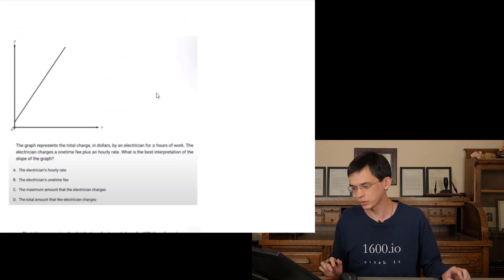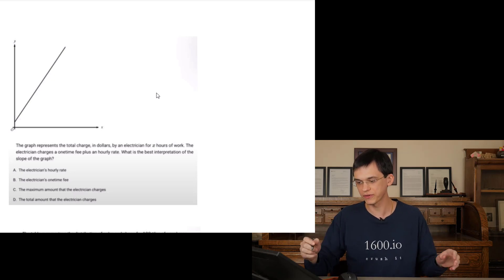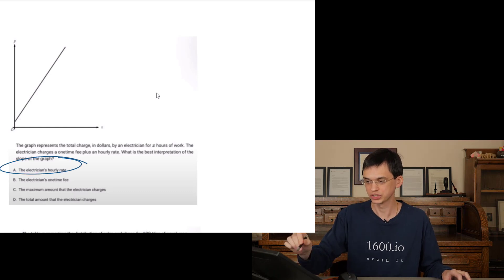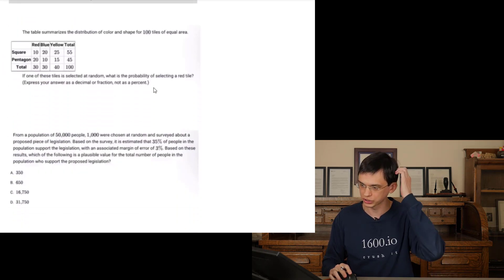The graph represents total charge in dollars electrician X hours of work. Electrician one-time fee that's the Y intercept plus an hourly rate slope. What's the best interpretation of the slope? Slope is the hourly rate. Change in Y over change in X. Change in dollars over change in time. Slope hourly rate. How much money we're getting per additional hour.